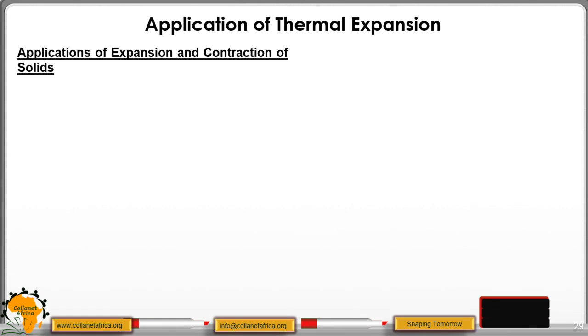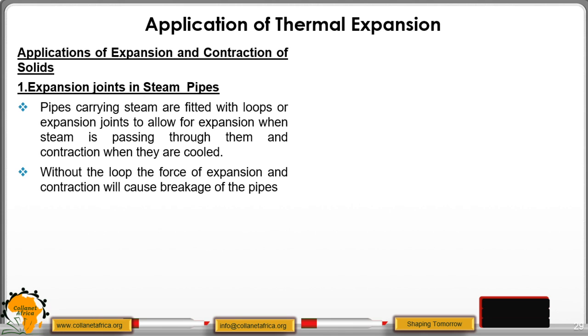Then we have application of expansion and contraction of solids. One, we have the expansion joints in steam pipes. When you have pipes that are carrying steam, they are always fitted with a loop, what we call the expansion joint. This will give room for expansion. As the steam is passing through the pipe and it expands, or the temperature decreases, it will have room where it can expand. This will prevent the breakage of the pipes.